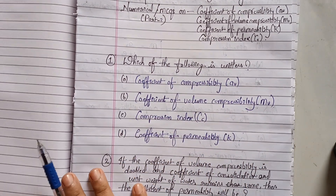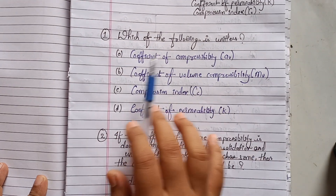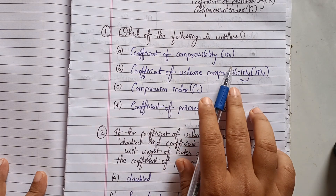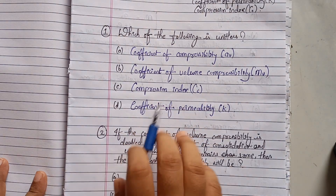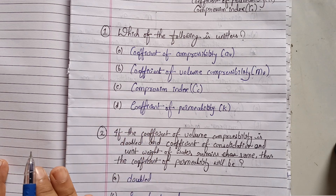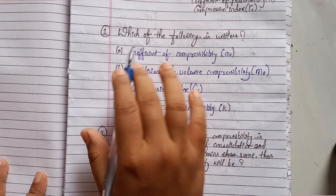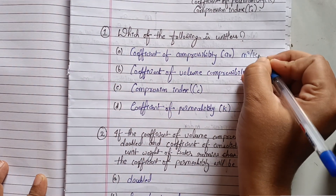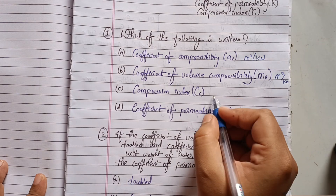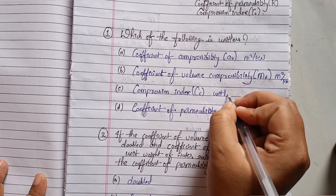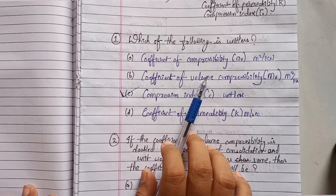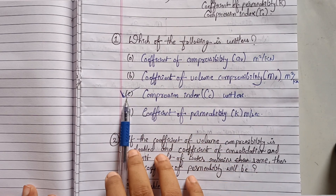The first question is: which of the following is unitless? You have four options — coefficient of compressibility (av), coefficient of volume compressibility (mv), compression index (Cc), and coefficient of permeability. The coefficient of compressibility has a unit of m²/kN, and coefficient of volume compressibility is also m²/kN. The compression index is unitless, so the correct option is option C — compression index.